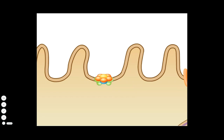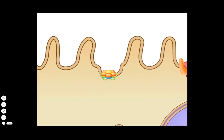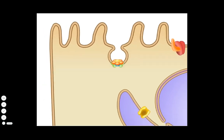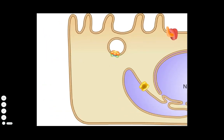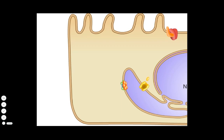The binding of cholera toxin to GM1 triggers endocytosis. The resulting toxin-containing vesicle is transported to the endoplasmic reticulum. The A1 peptide is then released from A2 and the rest of the complex by a reduction reaction at the disulfide bond. From the lumen of the endoplasmic reticulum, the toxin is then transported into the cytoplasm.